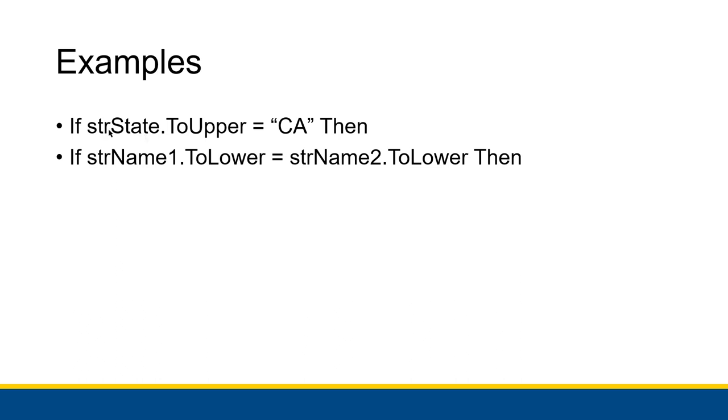If we wanted to modify strState, we could say strState equals strState.ToUpper. But we're not modifying it when we just do this, which is great because we can preserve user input. We can keep everything the same while also temporarily doing that conversion for our checks. So it's really helpful.